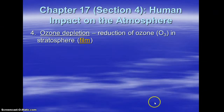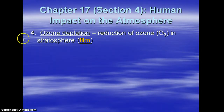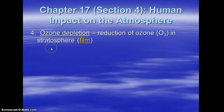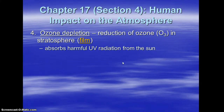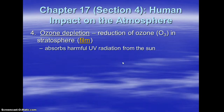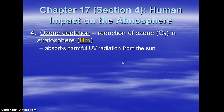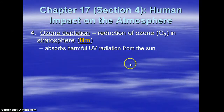Ozone depletion is our last human issue. We have a reduction in the O3 in the stratosphere — the stratosphere we like; ozone is good there. It protects us from UV radiation. Troposphere ozone is bad — that is an air pollutant. Ozone up in the stratosphere is able to absorb the harmful UV radiation from the sun, which is what causes sun tans, sunburns, and skin cancer.